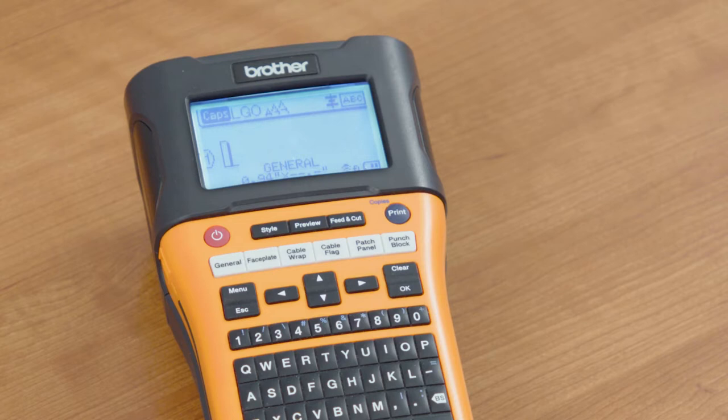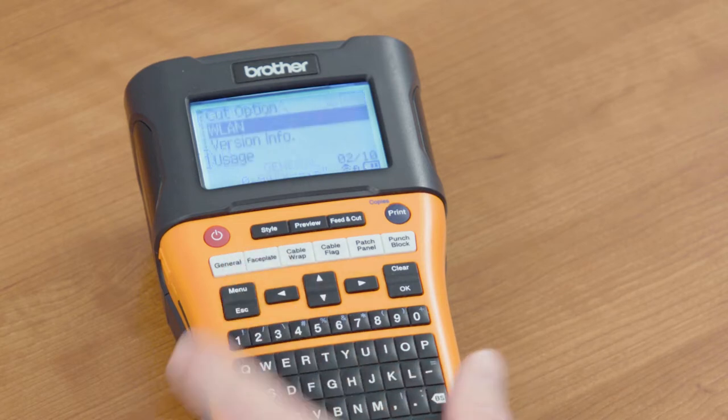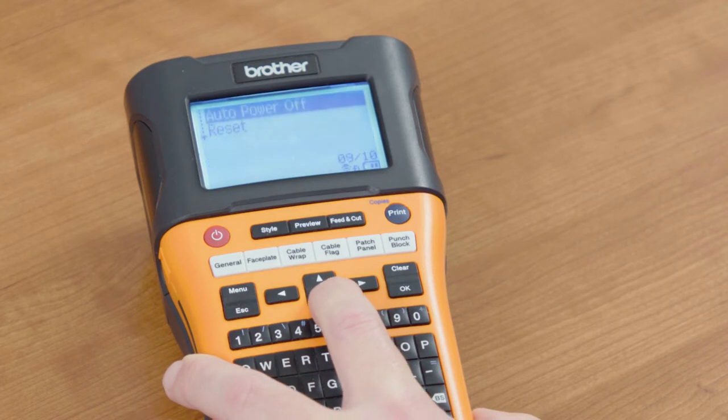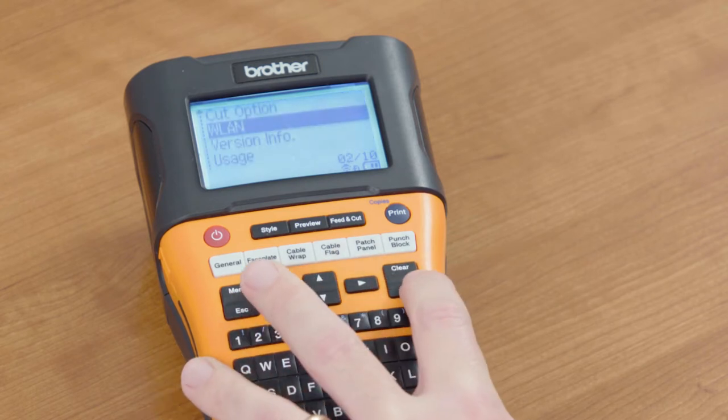Setting up the Wi-Fi on the PTE 550W, simply select the menu. Using your up and down arrow keys, move over to the WLAN menu and select OK.